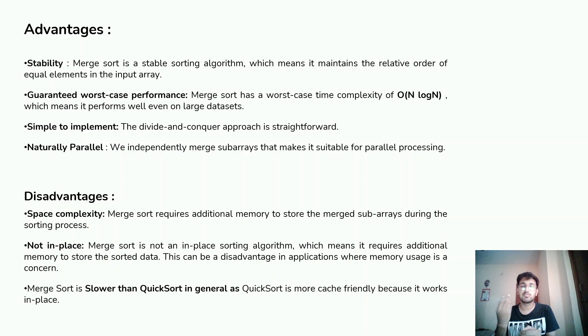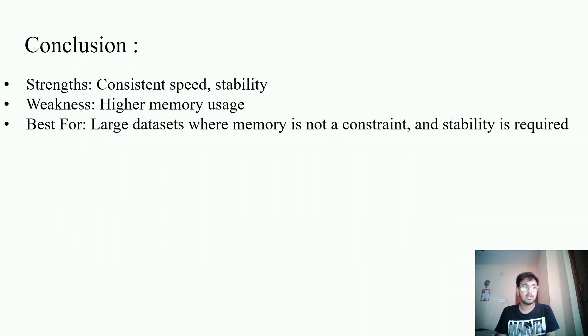There's also a few disadvantages when you use merge sort. The space complexity is really high compared to others, so it requires additional storage. Not in place: merge sort is not an in-place sorting algorithm which means it requires additional memory to store the data. This is a disadvantage if compared to quicksort. That's why quicksort takes over merge sort. Merge sort is slower than quicksort in general as quicksort is more cache friendly because it works in place. In conclusion, merge sort has consistent speed and stability but weakness is it uses higher memory usage.